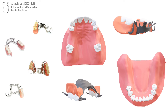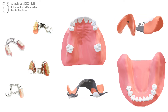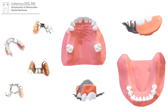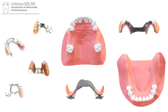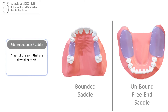They come in many different shapes and configurations, and in this lecture we'll go over some of the components that make up the partial denture. The dentureless pan or saddle is the area of the arch that is devoid of teeth. It can be bounded on both ends with teeth, in which case it's called a bounded saddle, or unbound on one end, in which case it's called an unbound or free-end saddle.